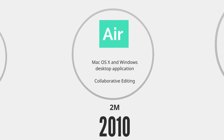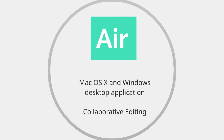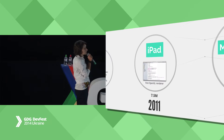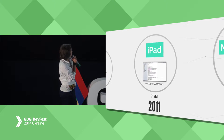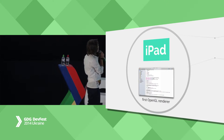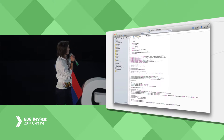The next year we took the first steps into multi-platform because we introduced Mac and Windows desktop clients. Basically it was the same Flash application just wrapped into an Air application. We also introduced features like collaborative editing and PPT import. In 2011 we introduced our first iPad version and also the first native OpenGL renderer, which was purely implemented in Objective-C.